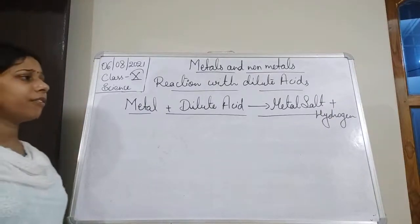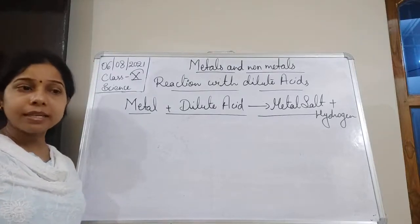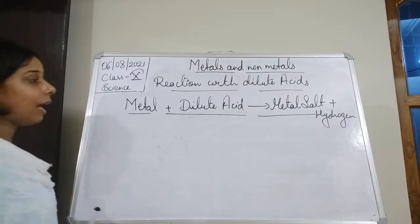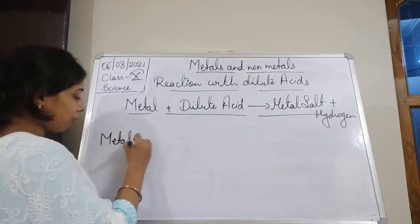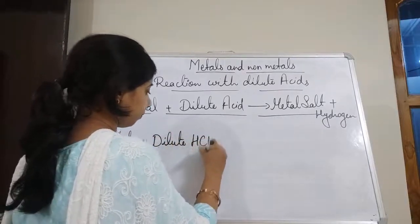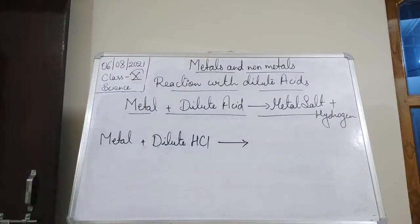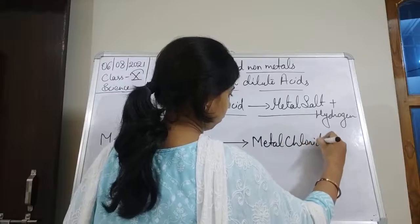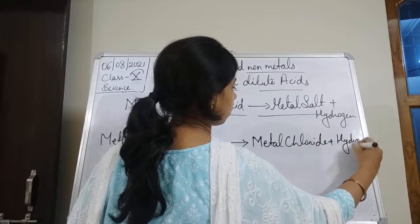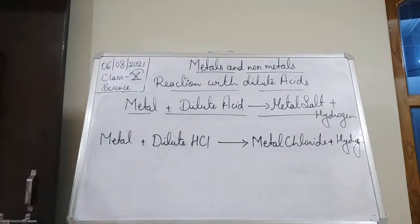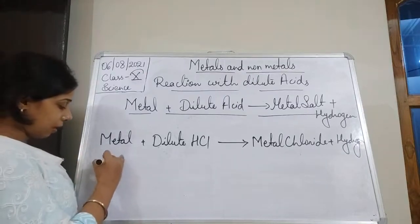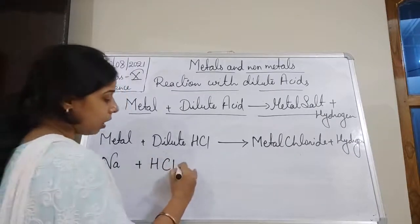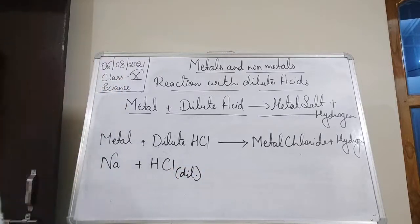There are metals which react vigorously with acid and there are metals which do not react at all. Starting with the first one: when a metal reacts with dilute hydrochloric acid, there is formation of a metal chloride plus hydrogen. For sodium reacting with dilute HCl (aqueous form):